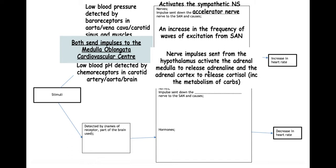Adrenaline will increase the heart rate and cause more carbohydrates to be released from the liver, and cortisol will also increase the metabolism of carbohydrates. This means more glucose is available for aerobic respiration to increase the heart rate and to generate ATP for muscle contraction.